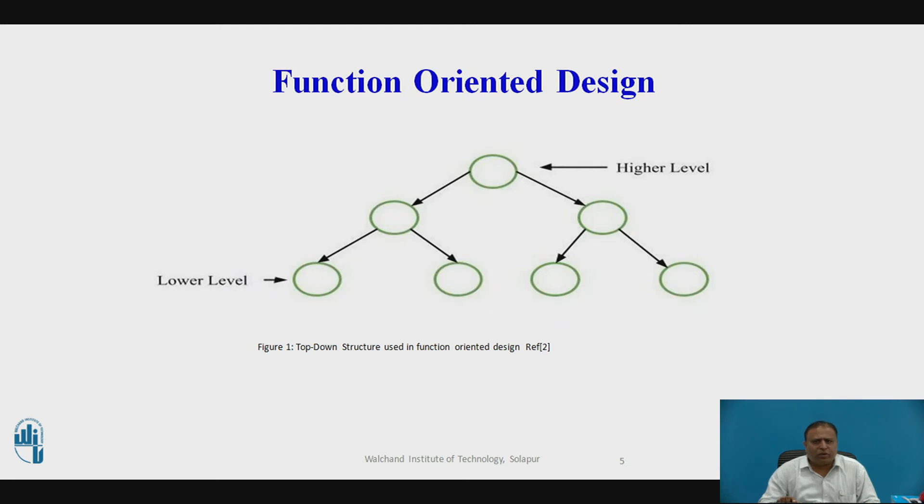This is the diagram of functional oriented design where the high level abstraction can be shown and low level abstraction can be shown. The different modules are interconnected with each other. This is the top-down structure used in functional oriented design where modules are interconnected in top-down approach.